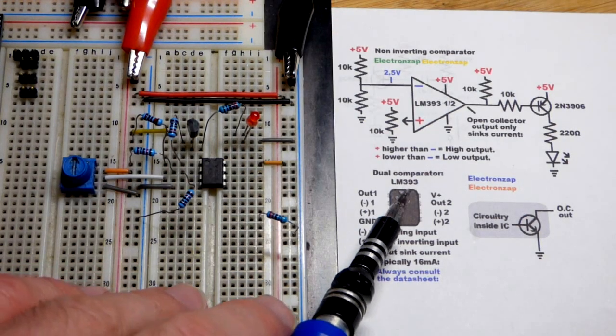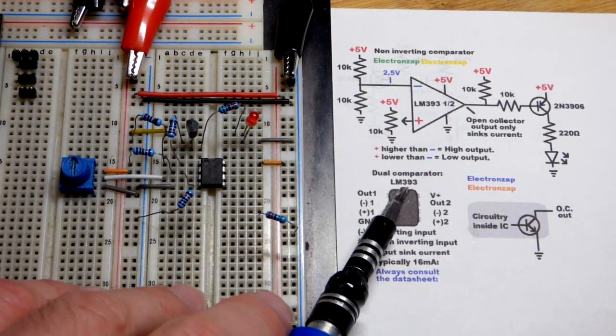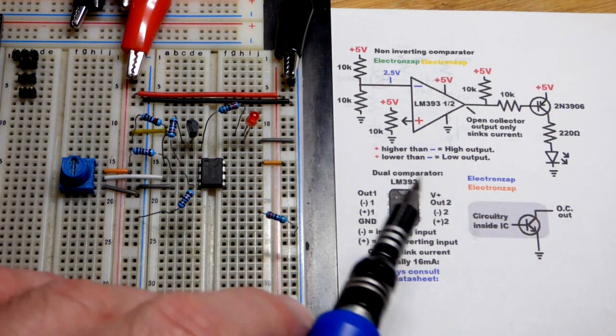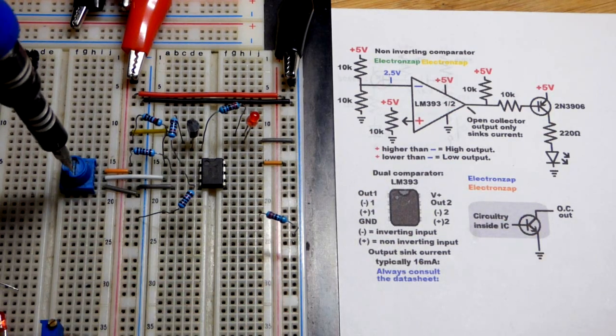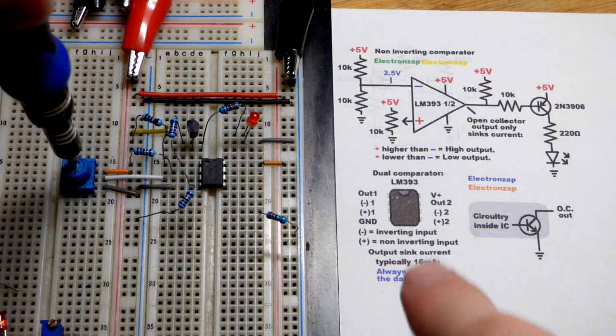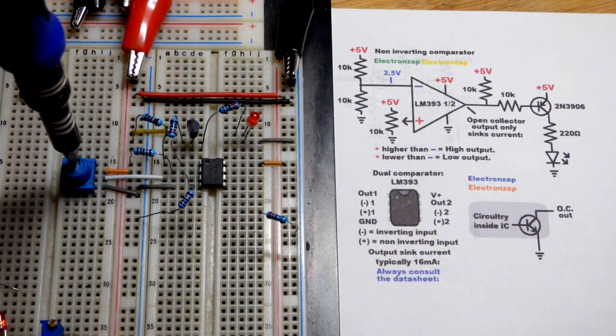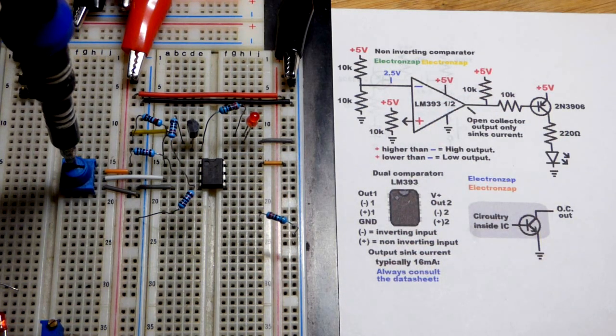So now in this video, we're just going to make an introductory look at the LM393. There's other letters before the 393, but the main thing is that 393. So it's just a comparator integrated circuit, even though it has the same schematic symbol as an op amp.